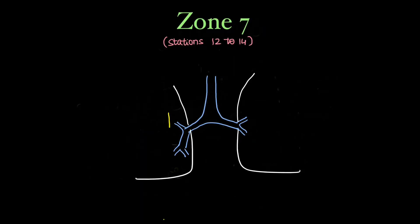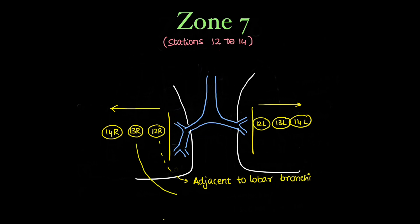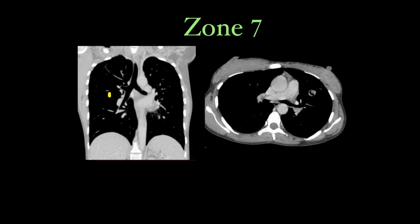Zone 7 is the last zone, containing stations 12 to 14 — the peripheral or intrapulmonary nodes. After station 11, nodes found more peripherally are labeled 12, 13, and 14 on right and left respectively. Station 12 is adjacent to lobar bronchi, station 13 is adjacent to segmental bronchi, and station 14 is adjacent to subsegmental bronchi. This is confirmed on coronal and axial CT sections.